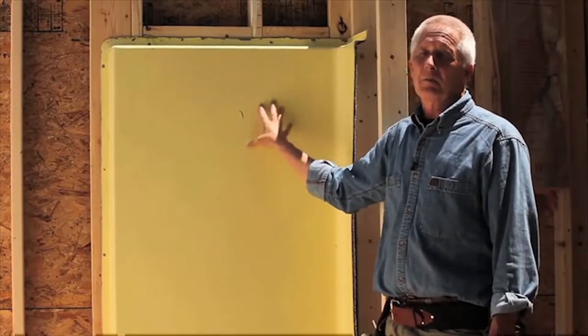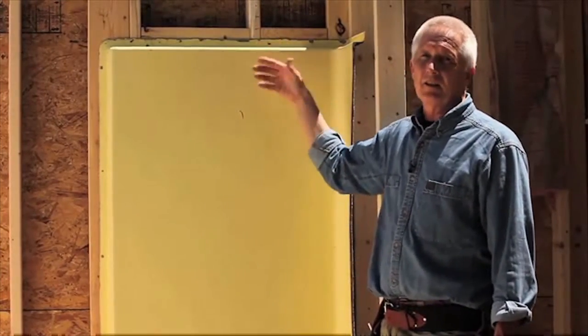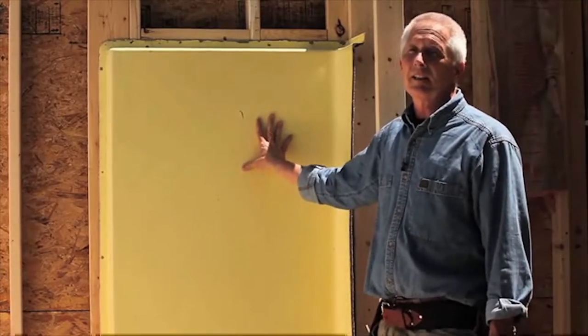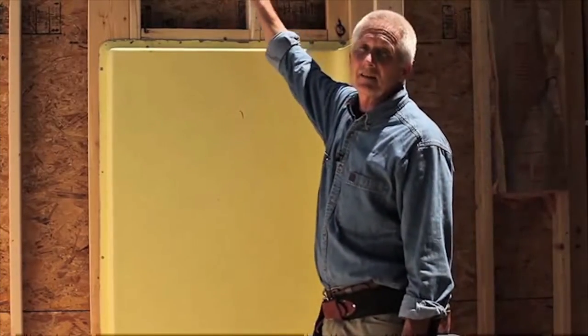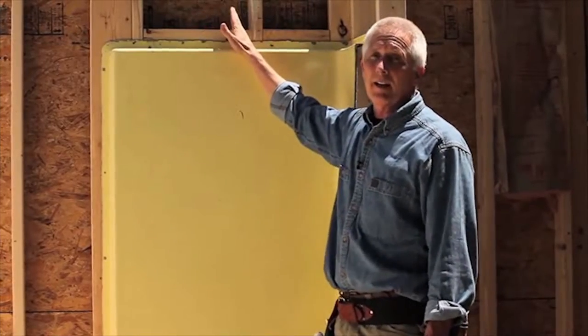Typically during construction, the plumber comes in and installs the wall unit before any insulation or air sealing is going on. Once this wall unit is in, it's almost impossible to get insulation all the way down behind there, and there's really no way to air seal it.